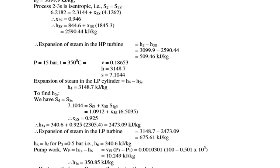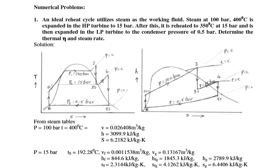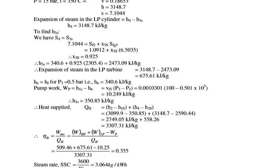Next, find the expansion of steam in the LP turbine: H4 minus H5S. For the isentropic process from 4 to 5, S4 = S5, so 7.1044 = SF5 + X5 × SFG5. Put the values and solve to get dryness fraction X5 = 0.925 at 0.5 bar condenser pressure.